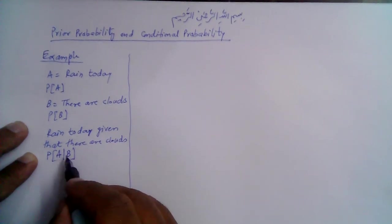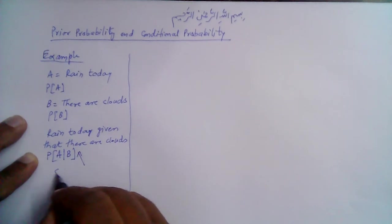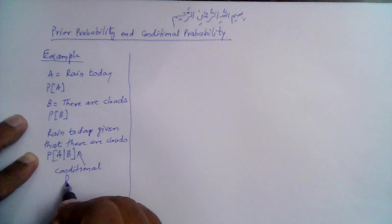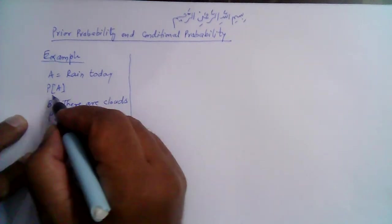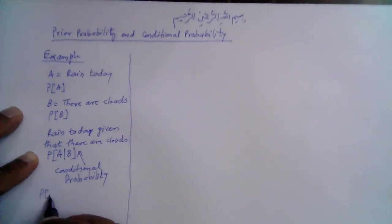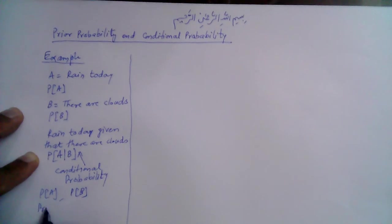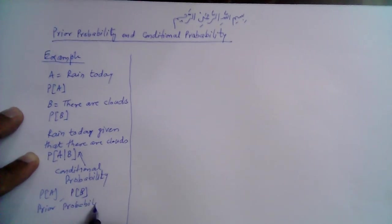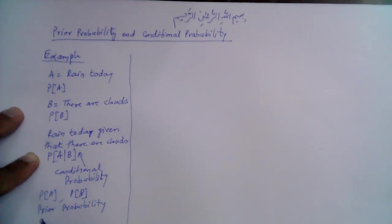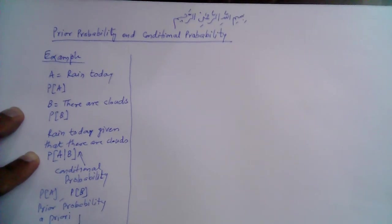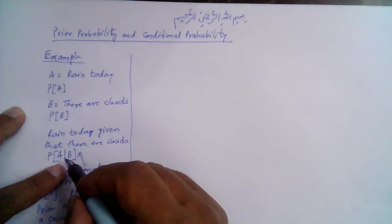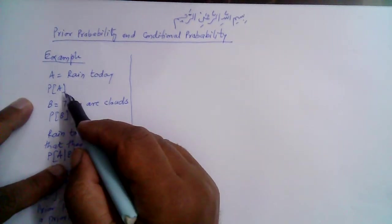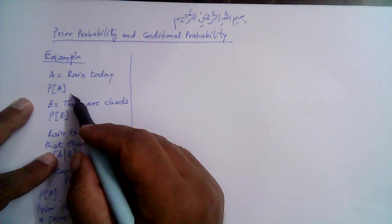This is conditional probability — probability under the condition that there are clouds. And P(A) and P(B) are called prior probabilities, also referred to as a priori probabilities. Given some information, this probability will change — it will be different from the a priori probability. So conditional probability will be different from the a priori probability.